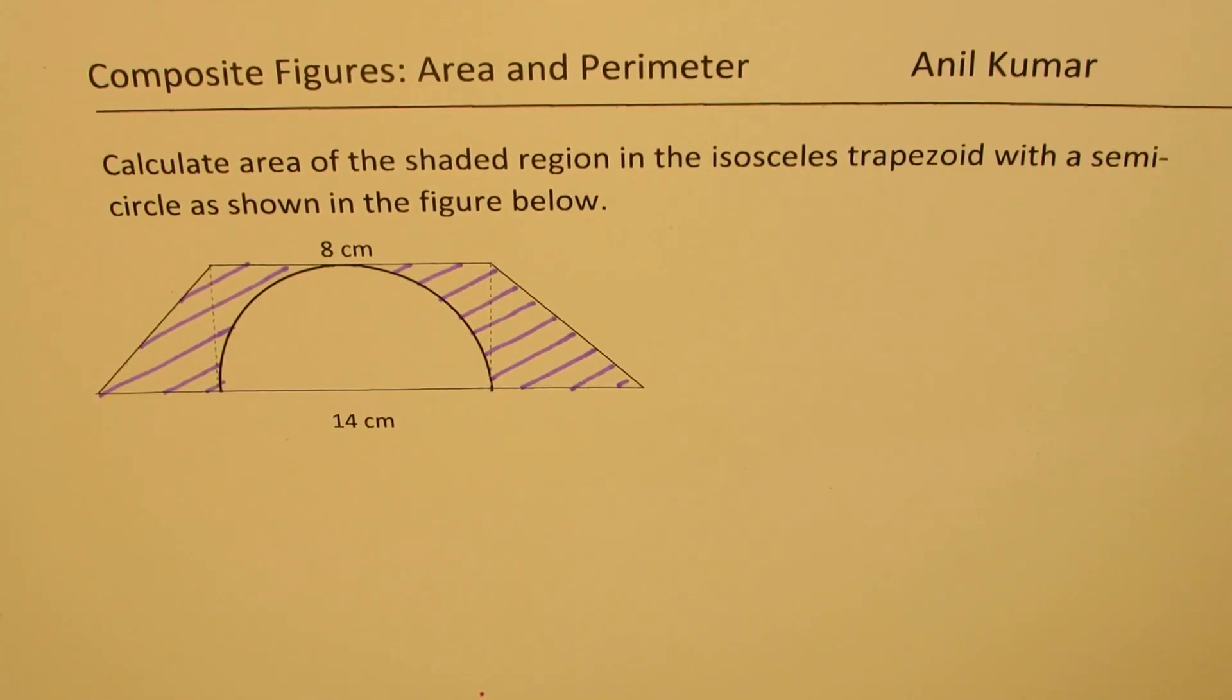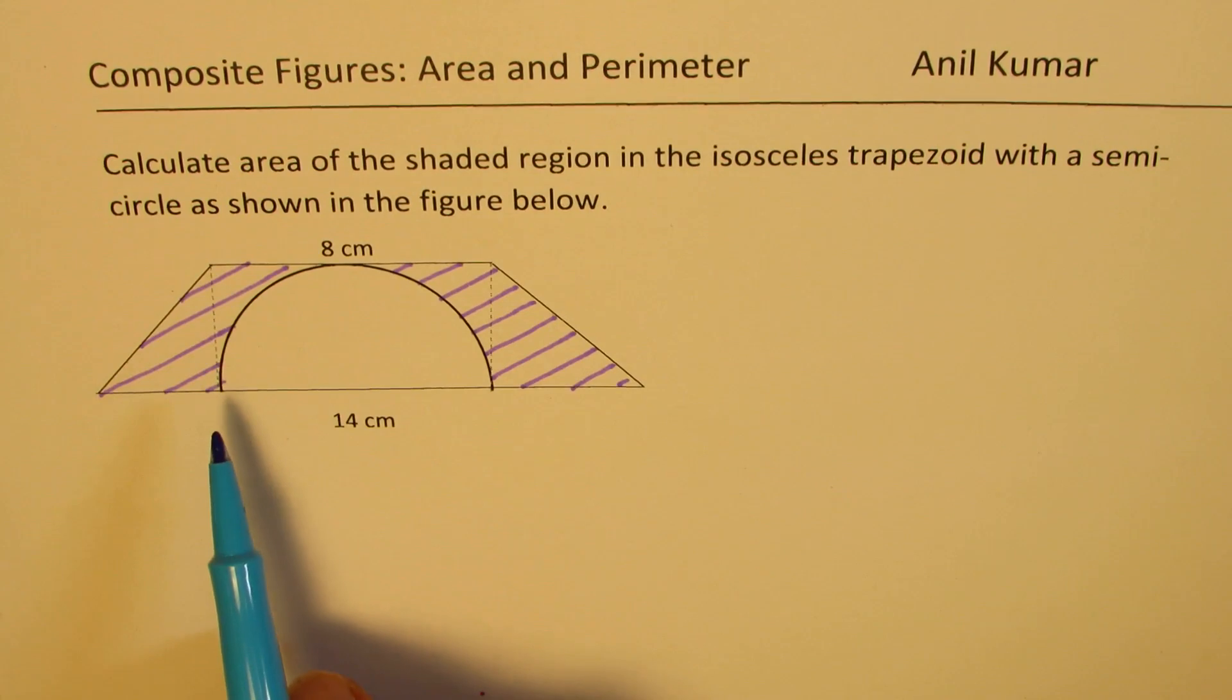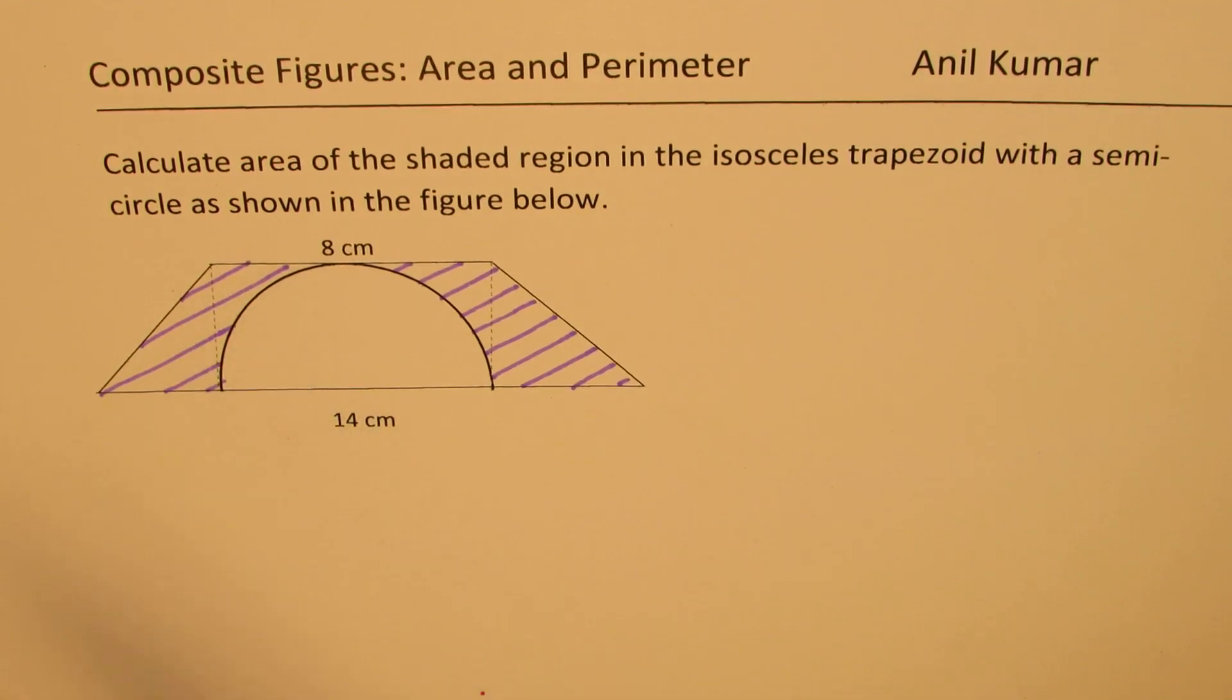I'm Anil Kumar. Welcome to my series on finding area and perimeter. In this particular question, we have a composite figure, a trapezoid in which there is a semicircle. So the semicircle has been taken away. The question here is, calculate area of the shaded region in the isosceles trapezoid with a semicircle as shown in the figure below. You can always pause the video, answer this question, and then look into my suggestions.